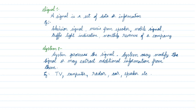What is a system? A system processes the signal. For example, the doctor measures temperature — the temperature reading is the signal, but the thermometer is the system. The television signal you view is the signal, but the television itself is the system. The speaker system may modify the signal or extract additional information from it.